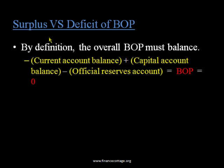If balance of payment is always balanced, what do we mean by surplus or deficit? Whenever we say surplus or deficit of balance of payment, we actually mean surplus or deficit of the current account. Balance of payment has three major accounts: current account, capital account, and official reserves account. The total of all three accounts should equal zero, so balance of payment is always balanced, but individual accounts may have a surplus or deficit.